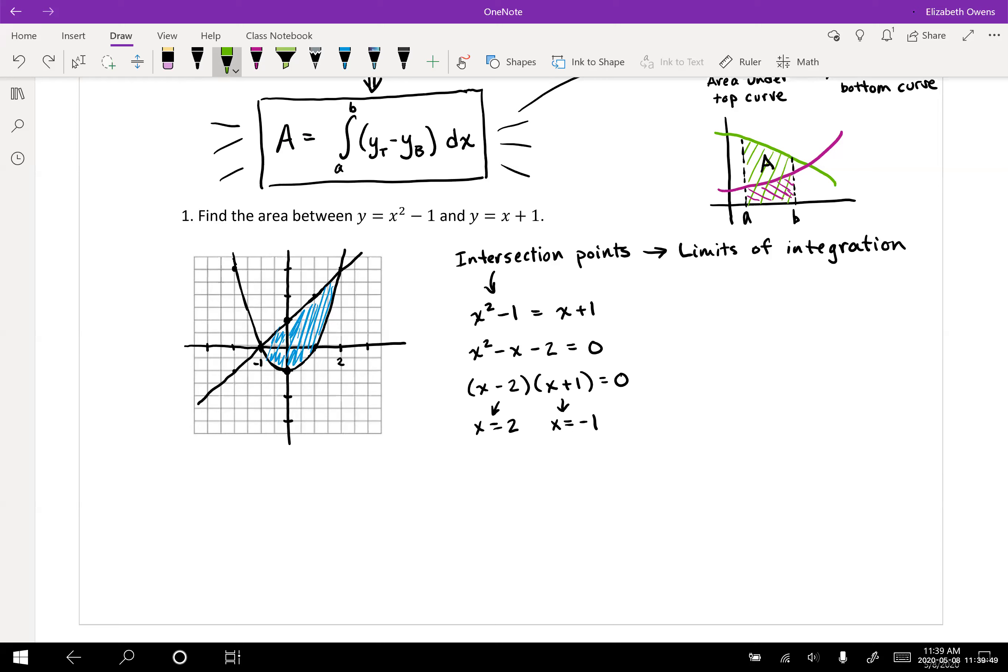In this particular graph, on the region that we're looking at, that blue shaded area there, the function that is on top or has the greater values that whole time, y top here is the line. So y top is the x plus one function. Then the function on the bottom with the lower values is our parabola. So y bottom is going to be the x squared minus one.